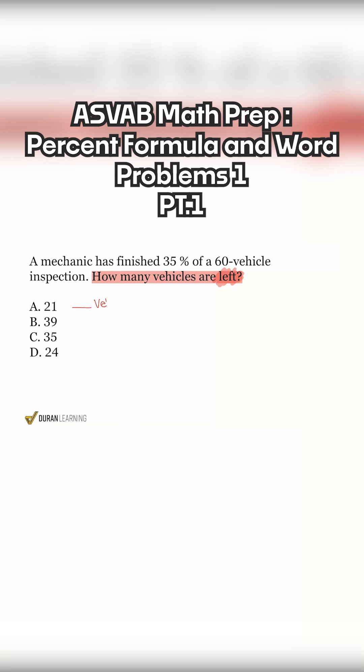We want to know blank vehicles left, and when we take a look at the information that we're given, let's line things up. A mechanic has finished 35% of a 60-vehicle inspection. We see clearly that it says we finished 35% of a 60-vehicle inspection.